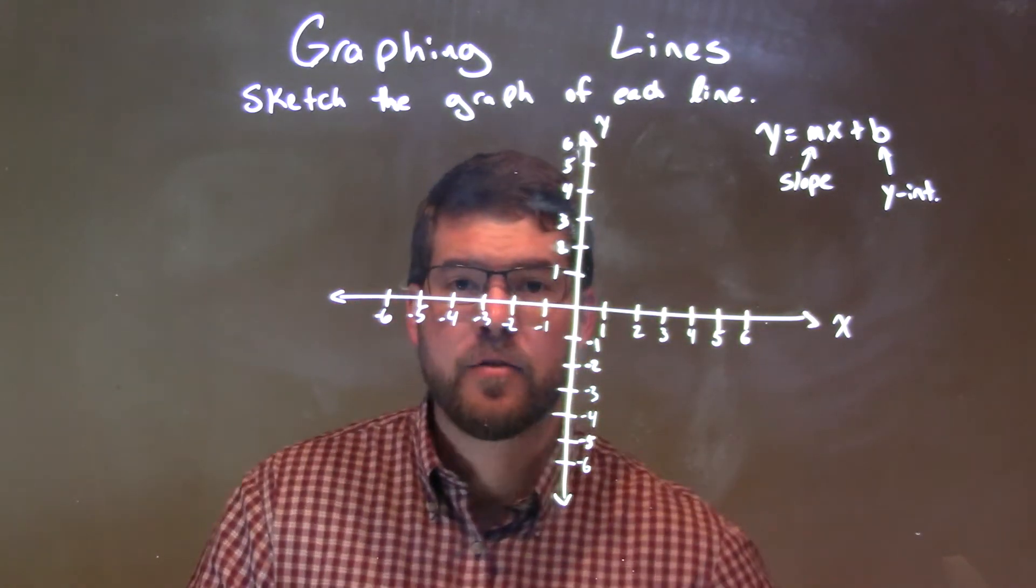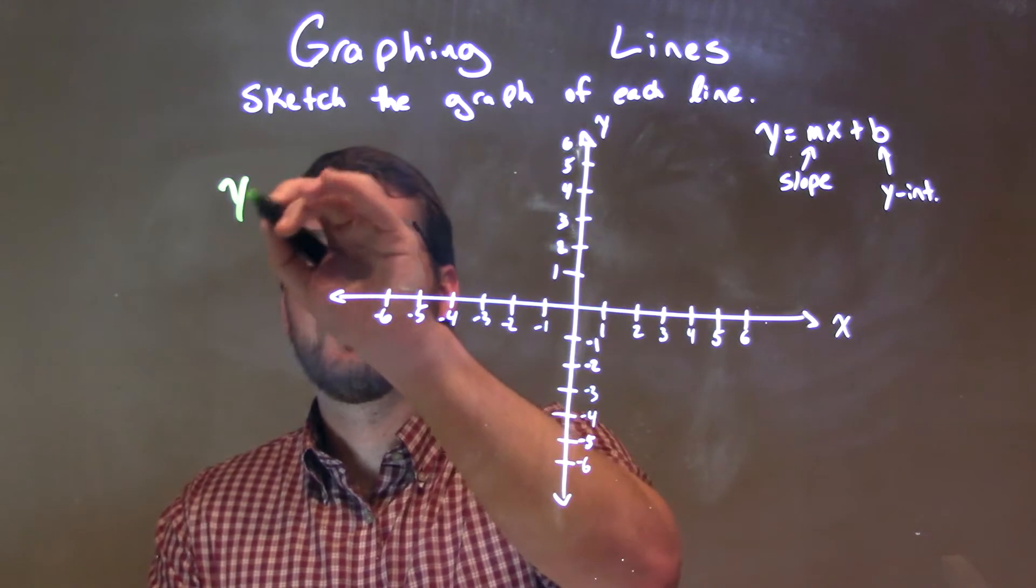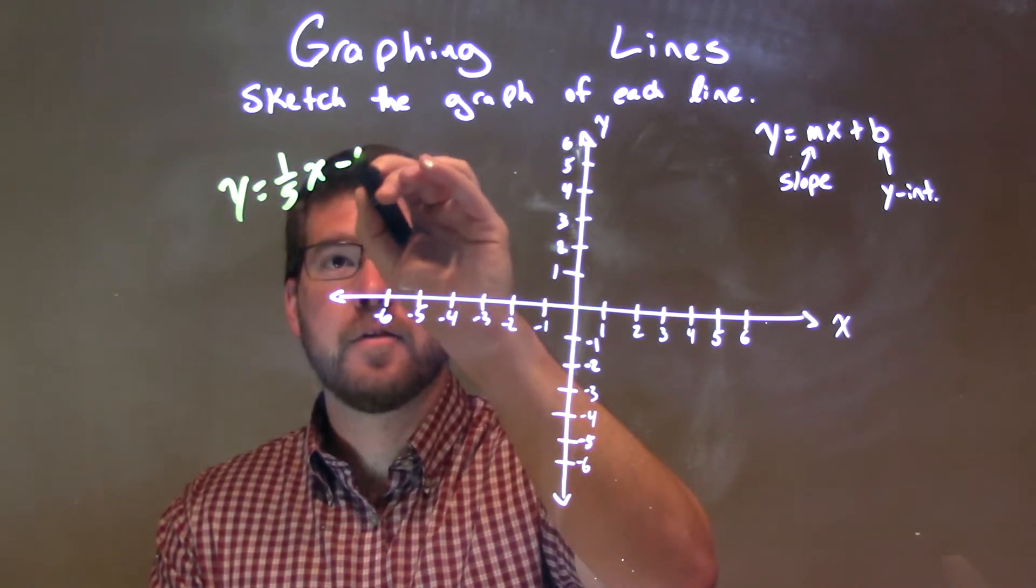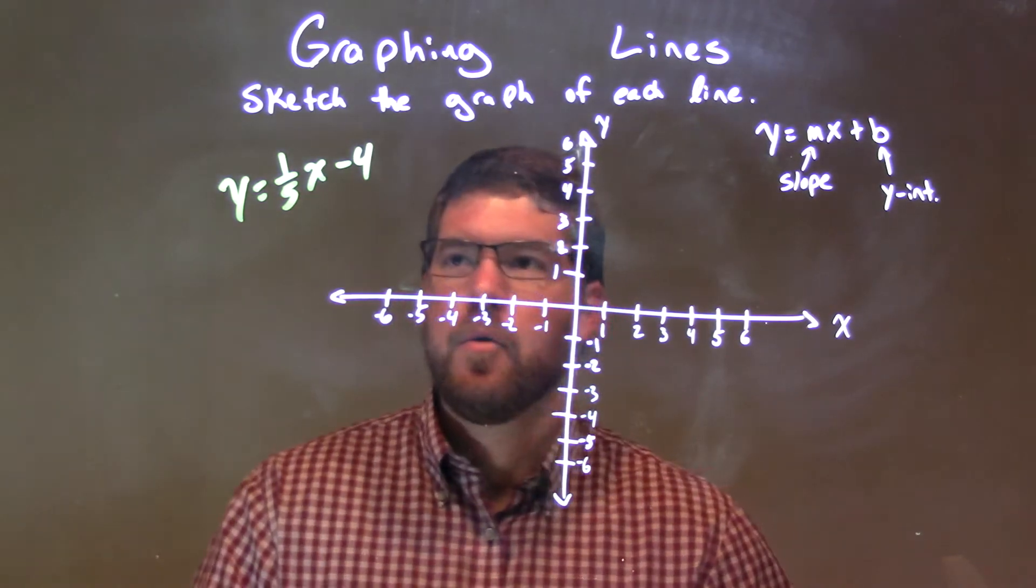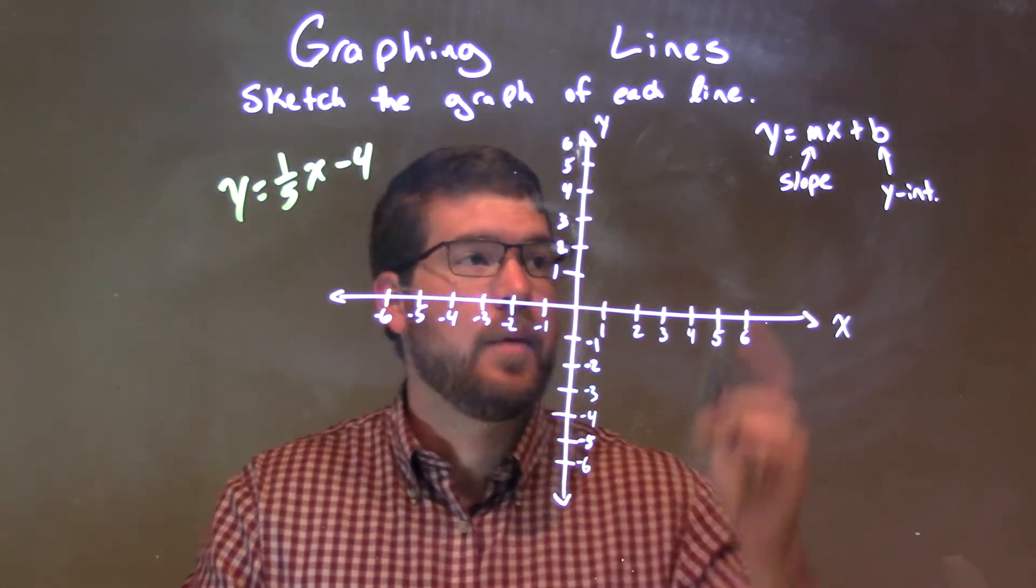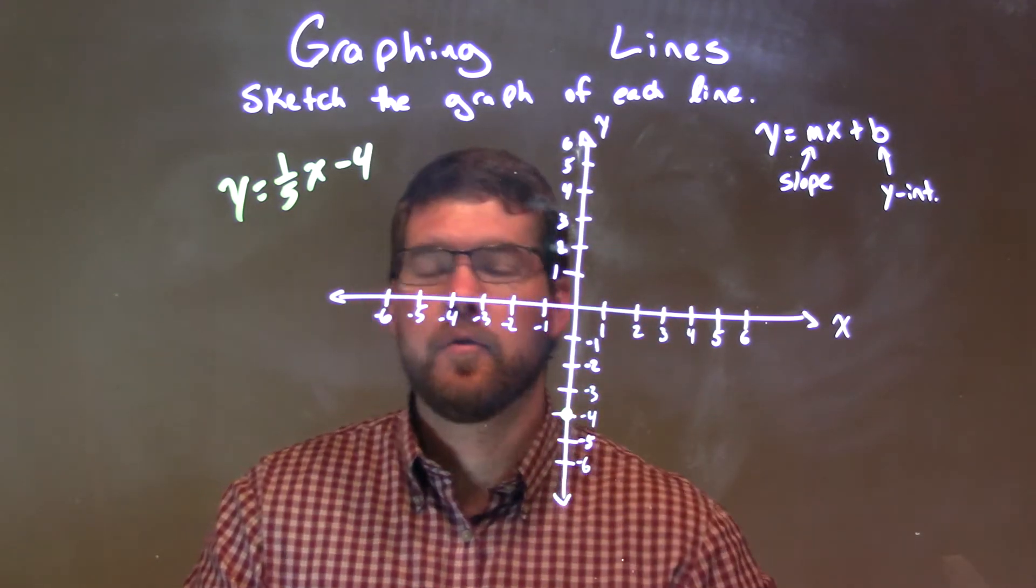Let's get the graph of each line. So, if I was given this equation, y equals 1 fifth x minus 4, well, what we have here, we'll first look at our y-intercept, our b-value, negative 4. So, I've got a dot here on the y-axis, right at negative 4.